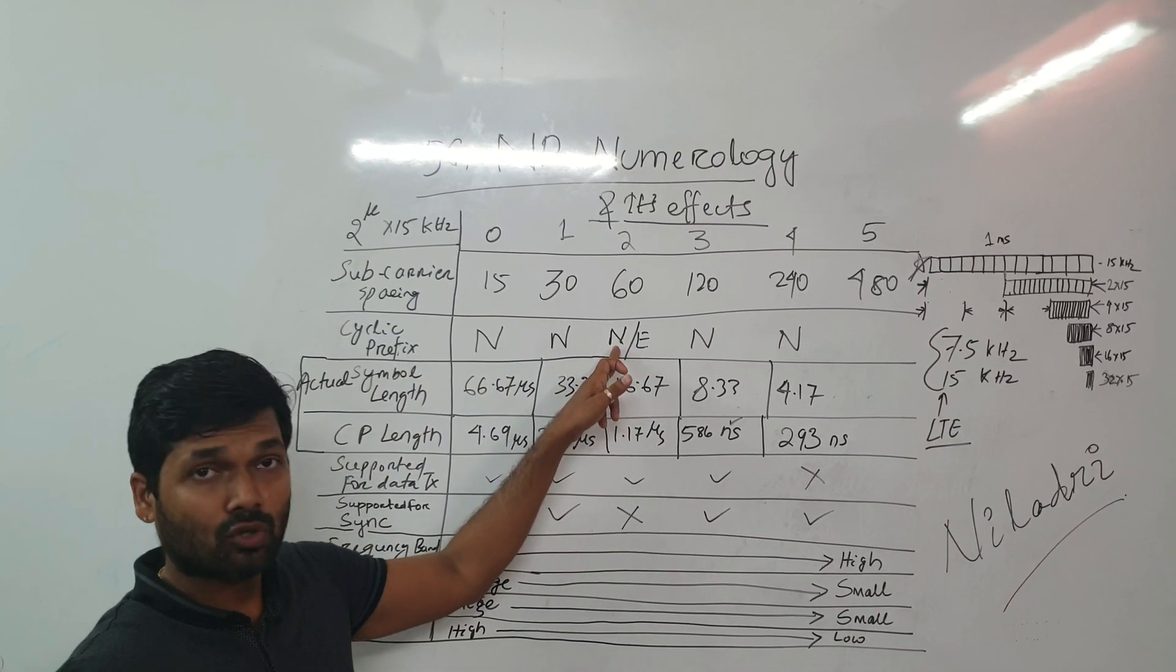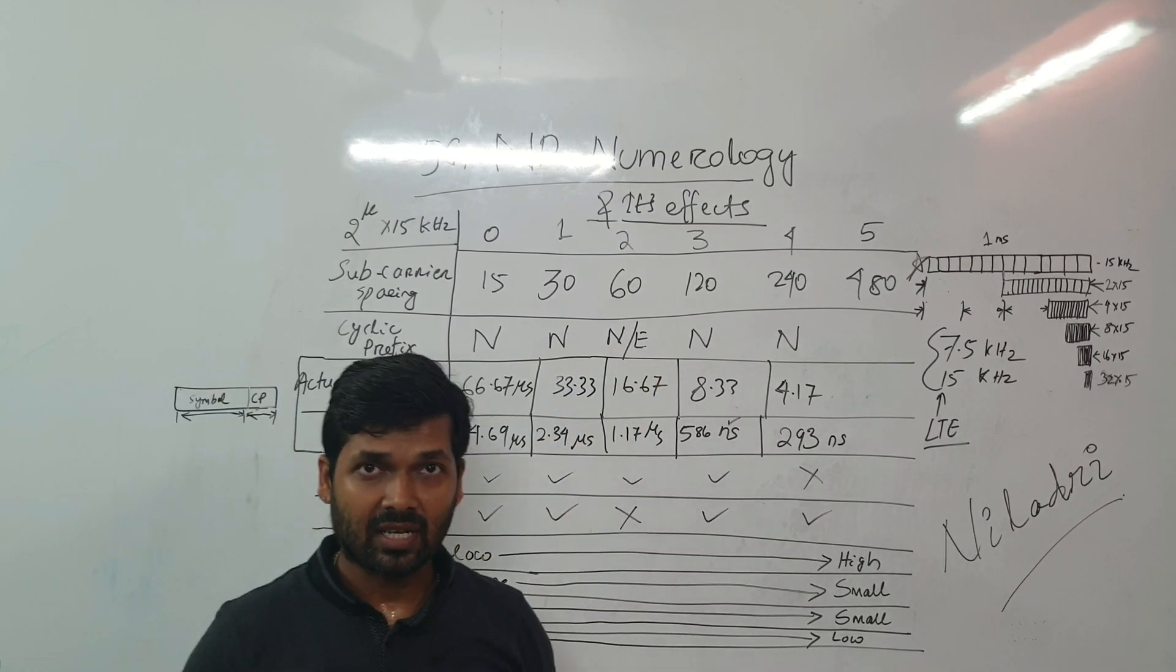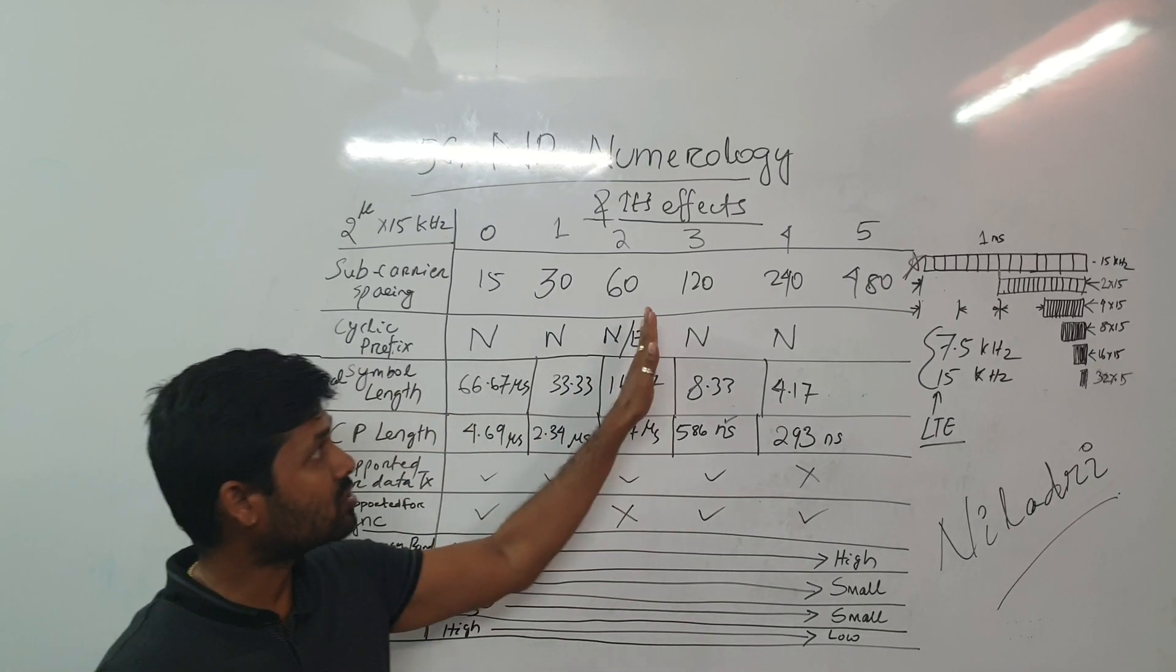And for the 60 kilohertz, we can use normal or we can go for extended cyclic prefix. Only for 60 kilohertz.